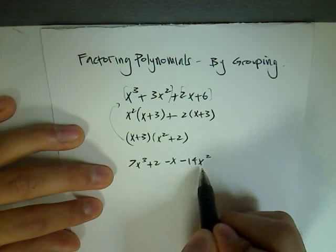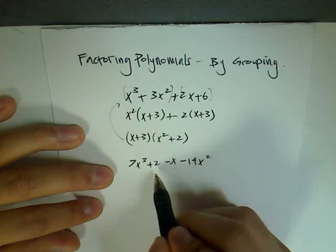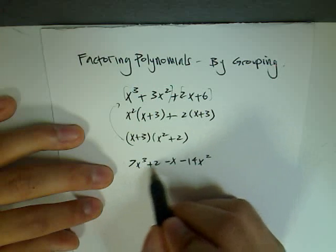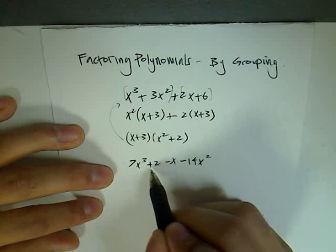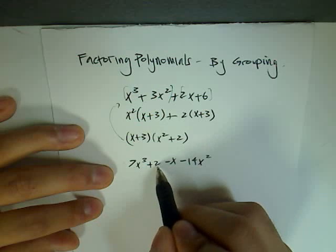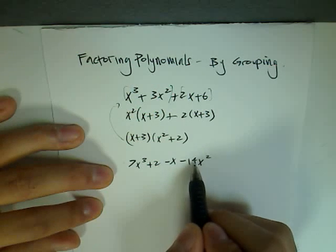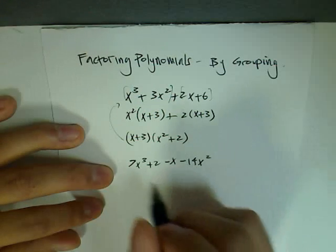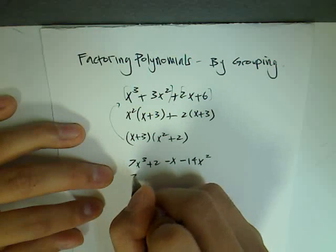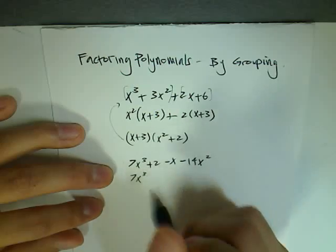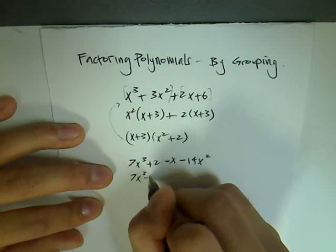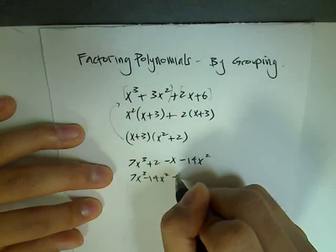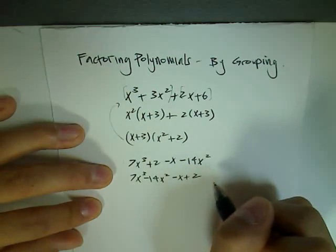Well, you know that you can't take out a common factor from each of these terms. And when you group it together, the first two terms, you see that you can't really group anything together, or you can't factor out anything from these two terms. So I would work my equation around and rearrange it so that I would be able to group properly. So let's say I change it to 7x cubed minus 14x squared minus x plus 2.